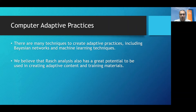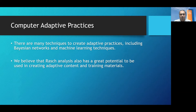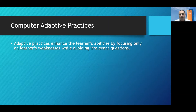If we review the literature, we can find that there are many techniques already used to create adaptive practices in e-learning systems. These techniques include overlay models, Bayesian networks, constraint-based models (CBMs), and different machine learning techniques. However, if we look into the literature, we would hardly find anything related to using Rasch analysis or Rasch models to create adaptive practices. On the other hand, we believe that Rasch analysis is a very powerful tool with great potential to be used in creating adaptive content, adaptive training materials, and adaptive practices.